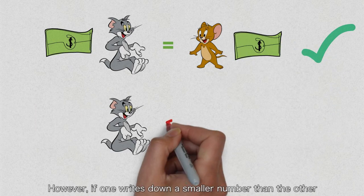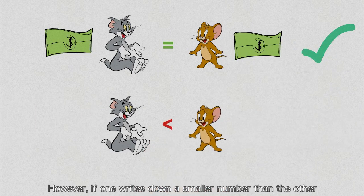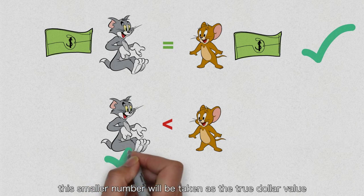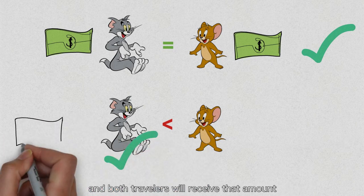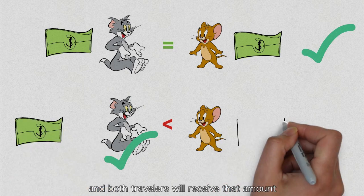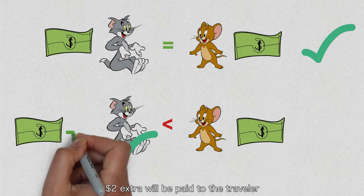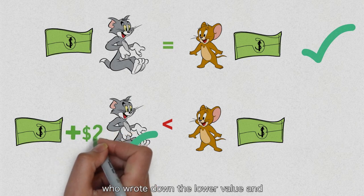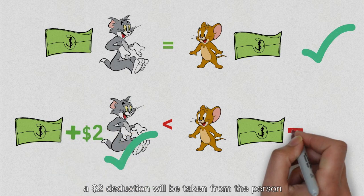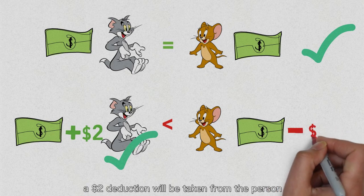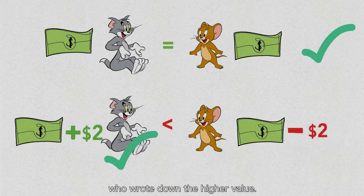However, if one writes down a smaller number than the other, the smaller number will be taken as the true dollar value and both travelers will receive that amount along with a bonus or punishment. Two dollars extra will be paid to the traveler who wrote down the lower value, and a two dollar deduction will be taken from the person who wrote down the higher value.